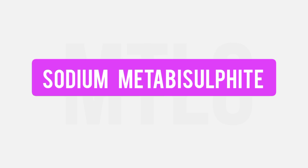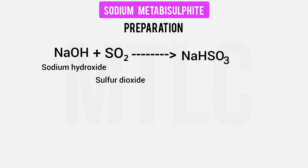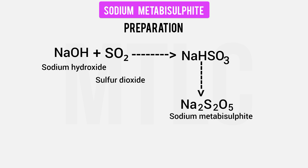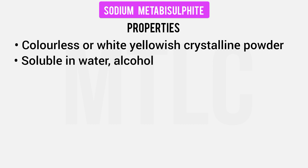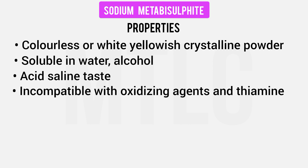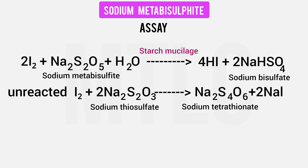Next is Sodium Metabisulfite, formula Na2S2O5. Sodium Hydrogen Sulphite forms a further reaction to give Sodium Metabisulfite. It is a colorless or white to yellowish crystalline powder, soluble in water but not in alcohol. The assay involves an oxidizing agent and back titration with iodine and starch mucilage indicator. Disappearance of color is the endpoint. Used as an antioxidant, for example in adrenaline injection.